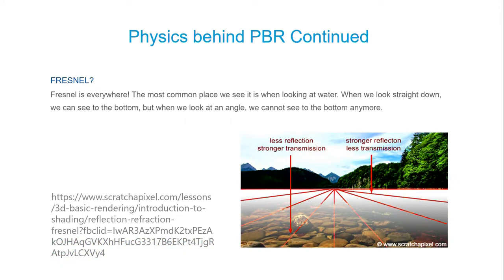Fresnel — we've all seen it. We're looking at water straight down and we can see to the bottom, but when we look at an angle, we can't see it. That's the Fresnel value. Everything has Fresnel. Like when I'm looking at this pole right here — when I get closer and look straight down I can see through, but when I look at it from an angle I can't really see much. It's just super reflective. That's the Fresnel effect, which we can simulate in the new 2019 materials.